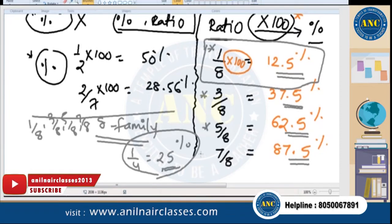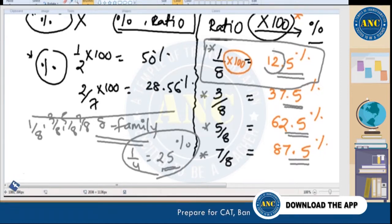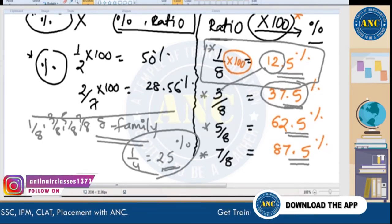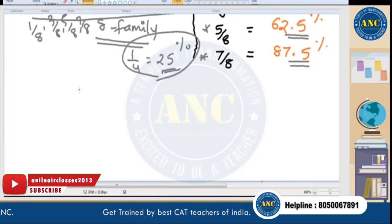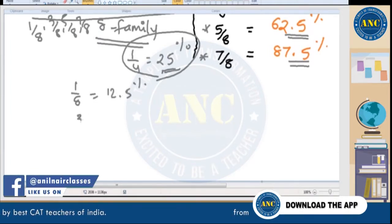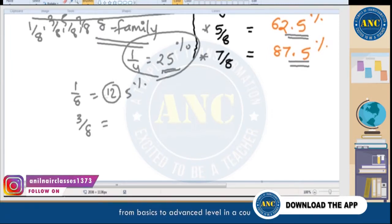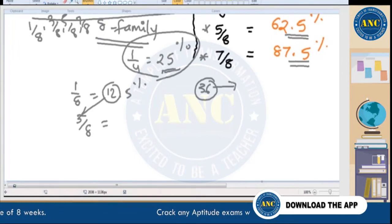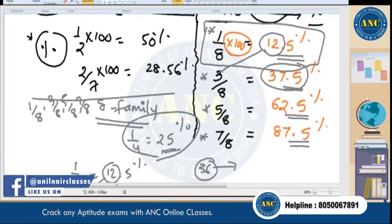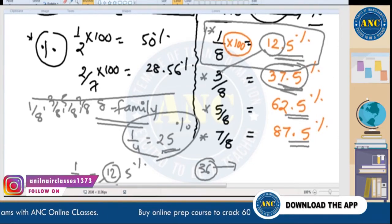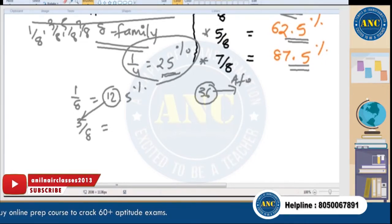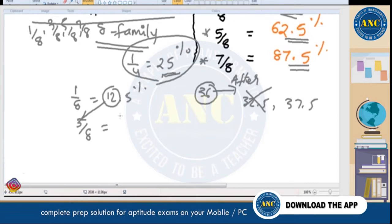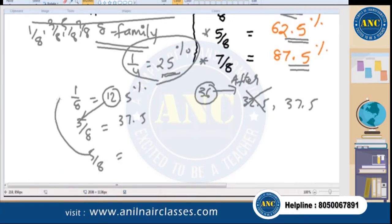For 3/8, multiply 12 by 3 to get 36. The answer must end in 2.5 or 7.5, so after 36 it must be 37.5. For 5/8, multiply 12 by 5 = 60; the answer is 62.5. For 7/8, multiply 12 by 7 = 84; after 84 the answer is 87.5.